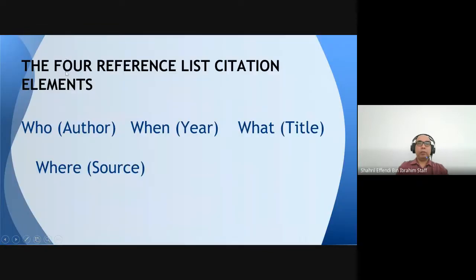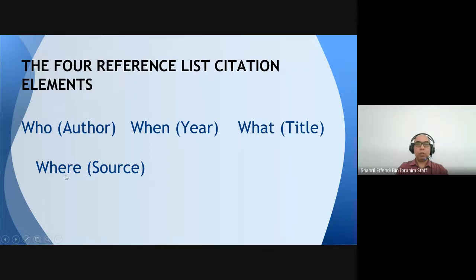The four reference list citation elements are: Who — the author's name should be first; When — the year should be second; What — the name of the book or article should be third; and Where — the source details: for a journal, the name of the journal; for a book, the name of the publisher. These are the important elements to follow in order.